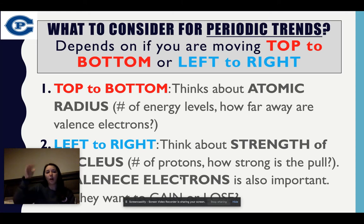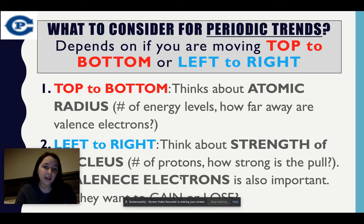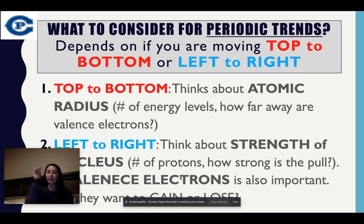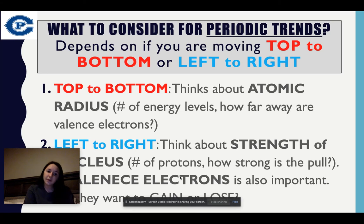As I'm moving top to bottom, I want you to think about the atomic radius — the number of energy levels and how far away the valence electrons are. When I'm going top to bottom, each of my periods have a number: I go 1 through 7. Those 1 through 7 represent how many rings I have. My first energy level has one ring, whereas my 7th energy level has 7 rings. This is important to consider how far the valence electrons are.